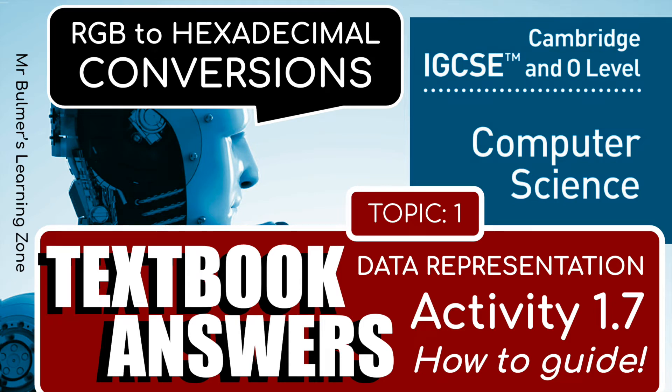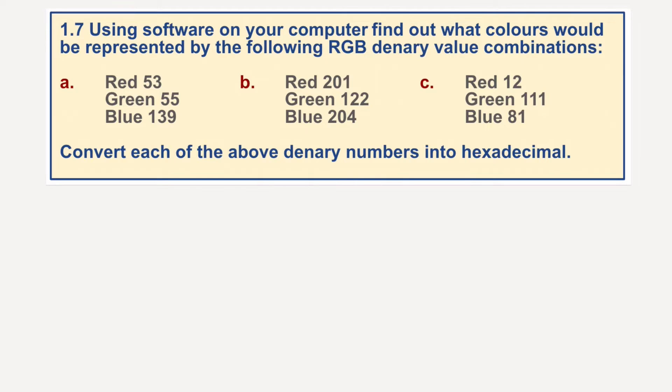We're back with 1.7. Using software on your computer, find out what colors would be represented by the following RGB denary value combinations. RGB obviously meaning red, green, blue. I'm going to go to some software, and it looks like we've got to convert each of the above denary numbers into hexadecimal. We'll do one of them and then we'll check the answers.